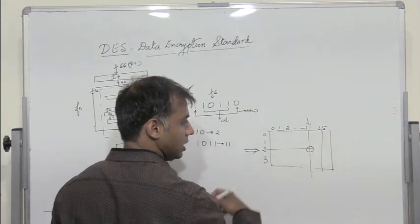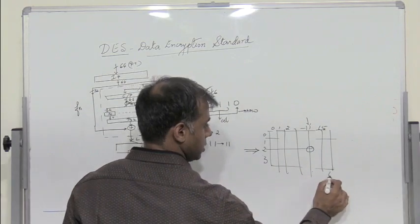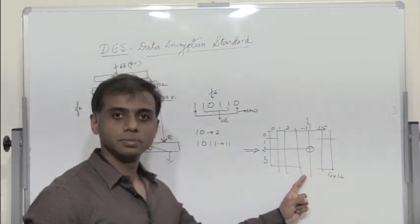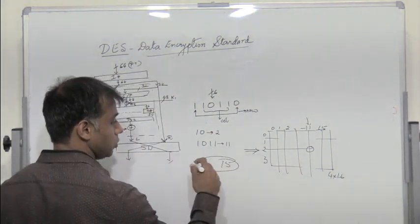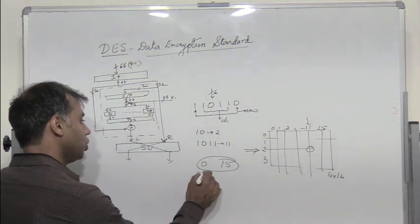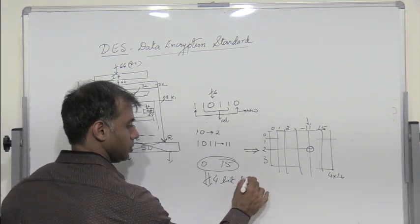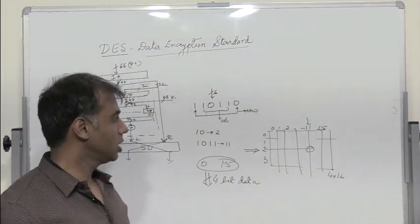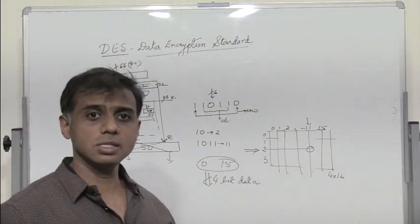Whatever data is there, this matrix is a 4 by 16 matrix. All the values within this matrix will be a number between 0 and 15. The output of each S-box will be a 4-bit data. Why is it a 4-bit data? Because the value varies between 0 and 15 which can be represented by a 4-bit combination. So therefore the output of each S-box is 4.